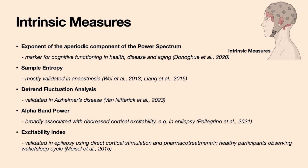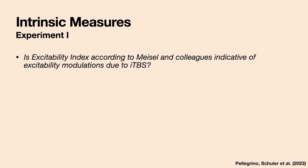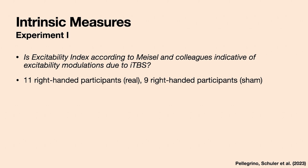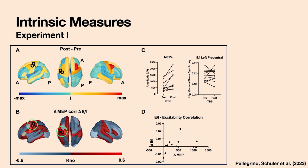Since we were most interested in this last measure, we launched pilot studies to see if it transfers to other proxies for excitability. In our first experiment, we investigated whether the excitability index according to Christian Meisel is indicative of excitability modulations due to iTBS. We had a small pilot study with standard iTBS over M1, using resting state EEG and single-pulse TMS before and after iTBS. There was a significant correlation between modulations in MEP and this intrinsic measure as suggested by Meisel and colleagues.